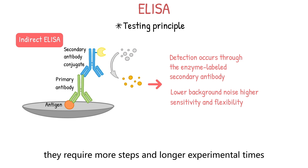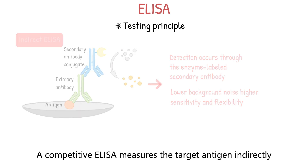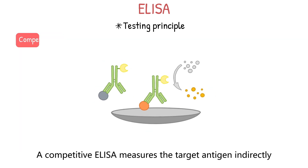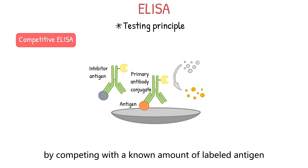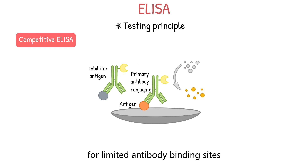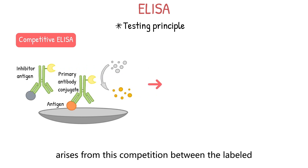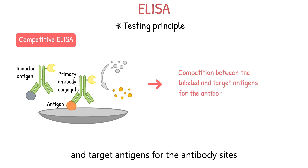However, indirect ELISAs require more steps and longer experimental times. A competitive ELISA measures the target antigen indirectly by competing with a known amount of labeled antigen for limited antibody binding sites. The term competitive arises from this competition between the labeled and target antigens for the antibody sites.